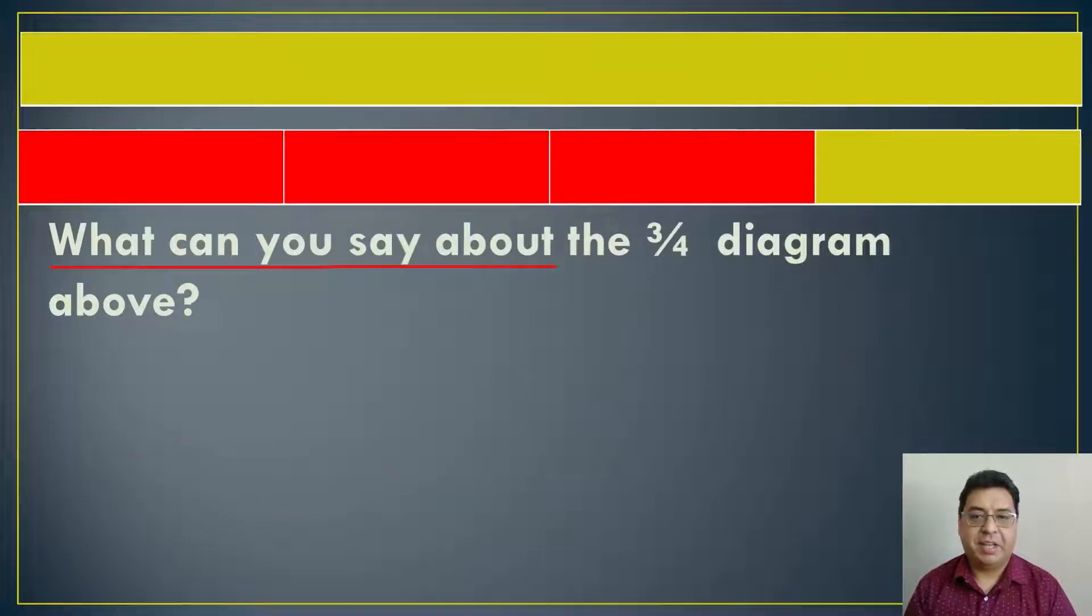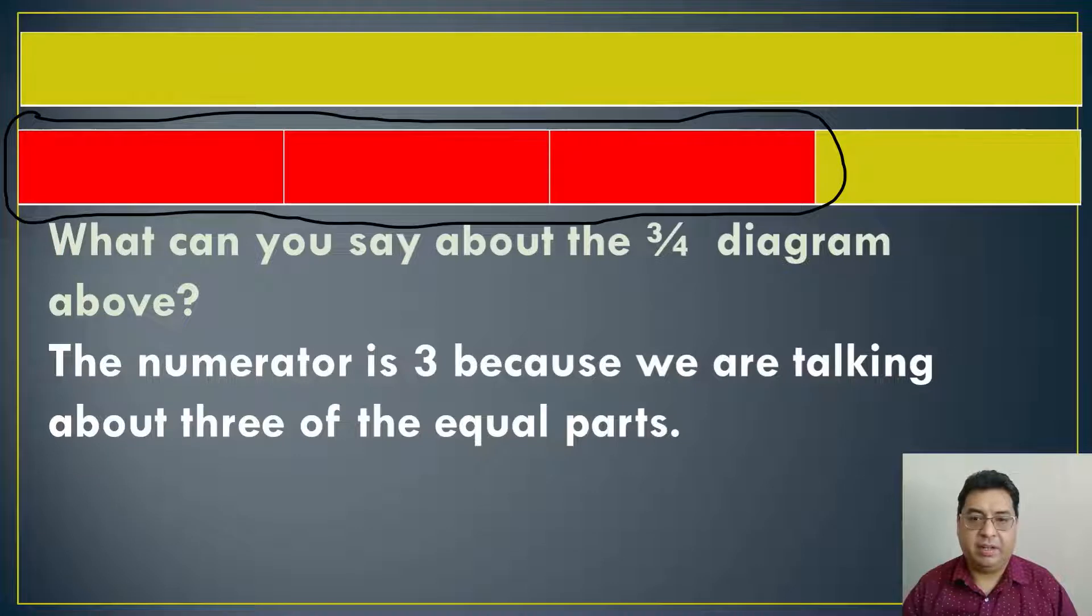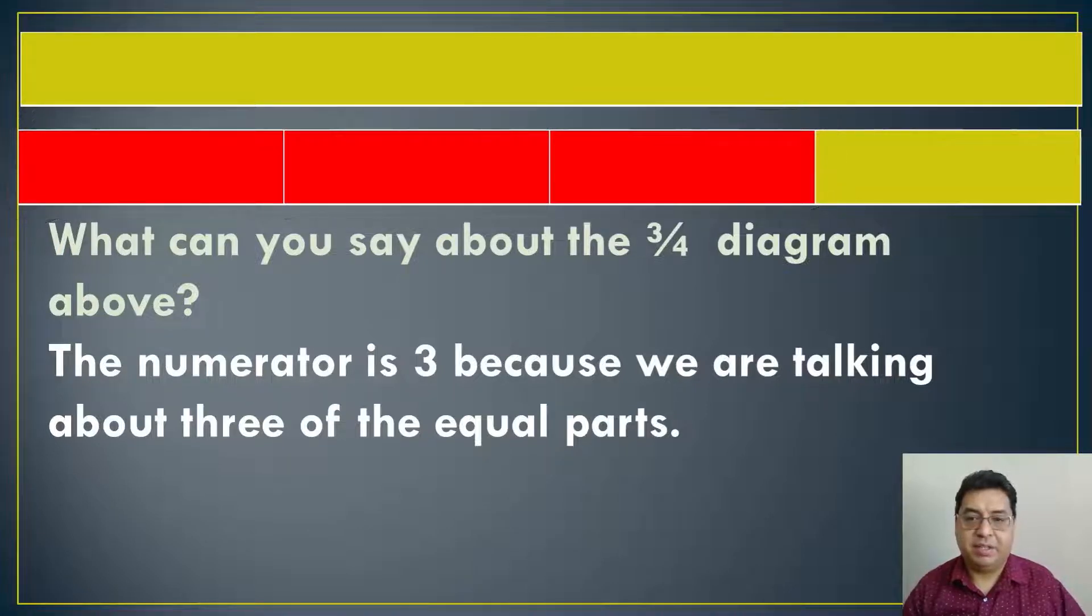What can you say about the three-fourths diagram above? So let's take a closer look at this. There's quite a few things you can say, and I'm just going to give you a couple of them. If you can think of any others, you can leave it in the description down below. The numerator is three because we were talking about three of the equal parts, and three of the equal parts here is this red part here that's shaded. So that's one thing you can say.